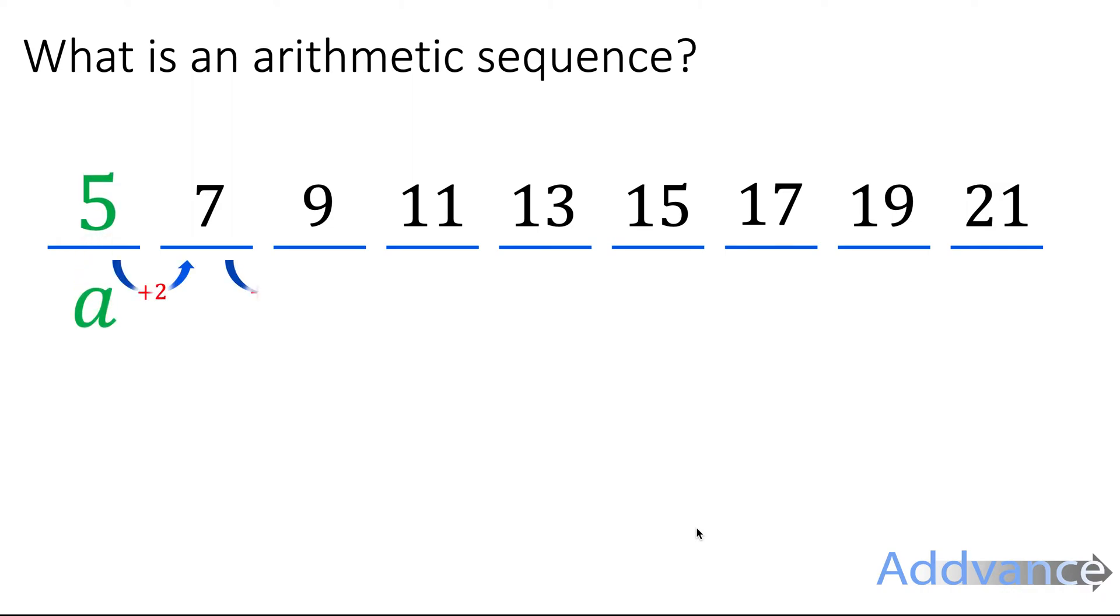An arithmetic sequence is a series of numbers where each number is going up by the same amount each time. For example, here we've got 5, 7, 9, etc. We start with 5 and we're going up by 2 each time. We're adding 2 each time.